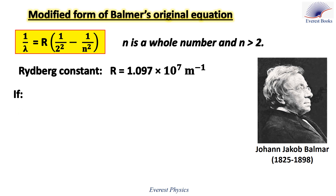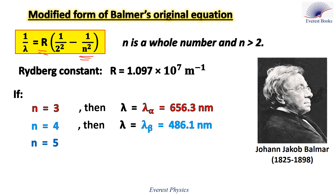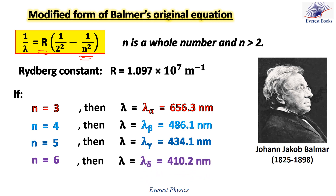Let's start with N = 3. Replace N by 3 in the equation and replace R by its value — you will get the wavelength of line alpha: 656.3 nm. Replace N by 4 to get the wavelength of line beta. Replace N by 5 to get line gamma. Finally, replace N by 6 to get the wavelength of line delta.